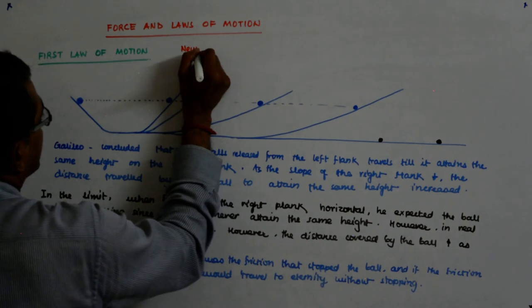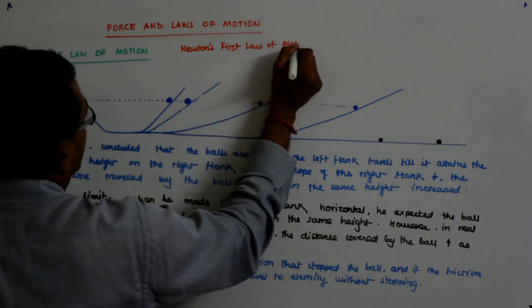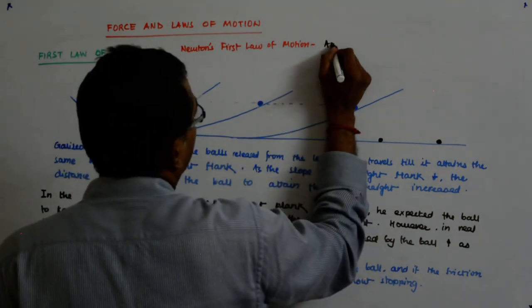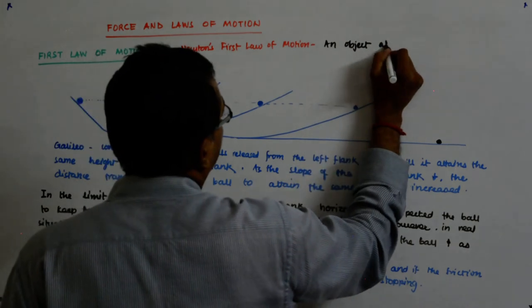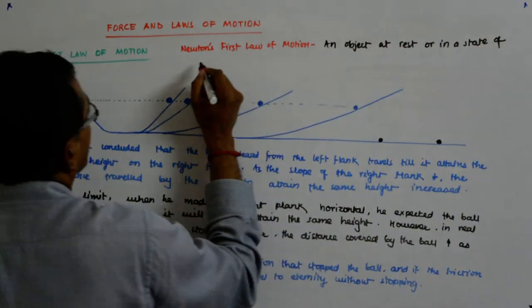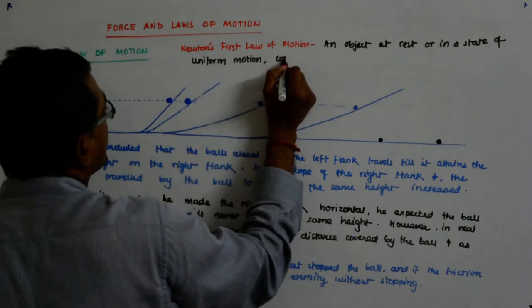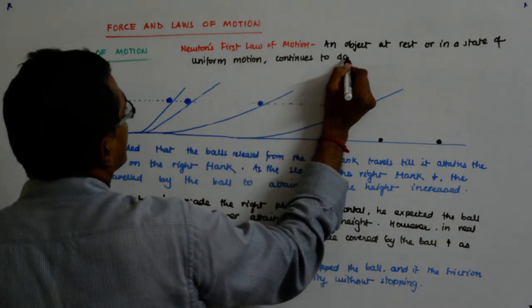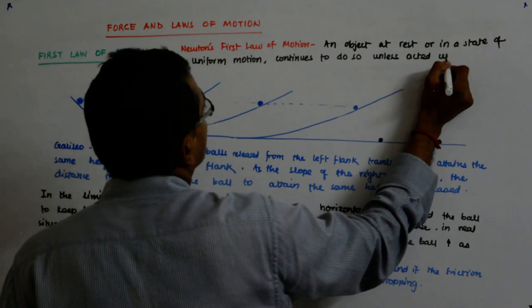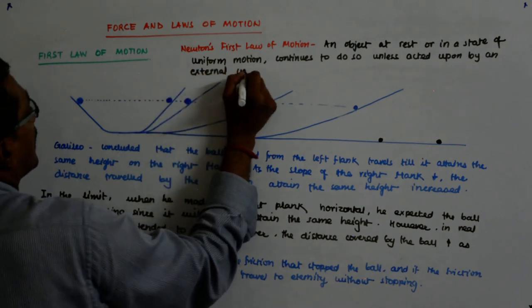Newton's first law of motion. What does it say? It says that an object at rest or in a state of uniform motion continues to do so unless acted upon by an external unbalanced force.